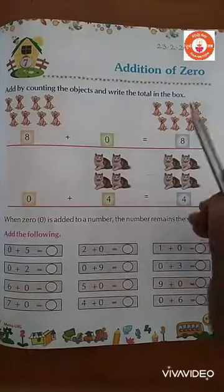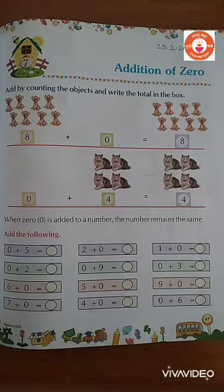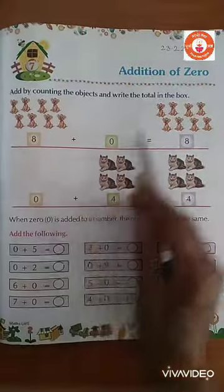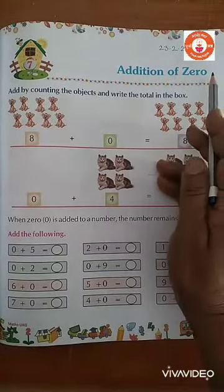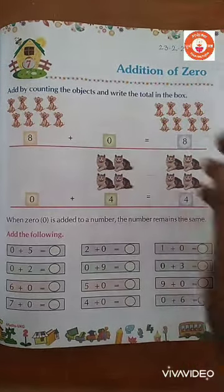Write today's date: 23-2-2021. Addition of 0. Today we are going to learn addition of 0.